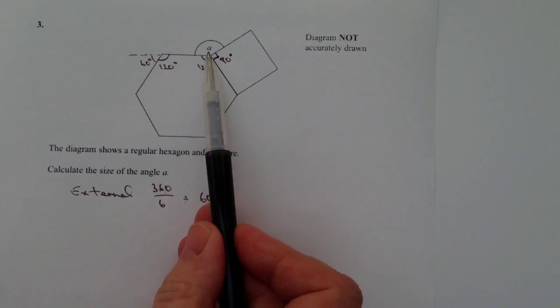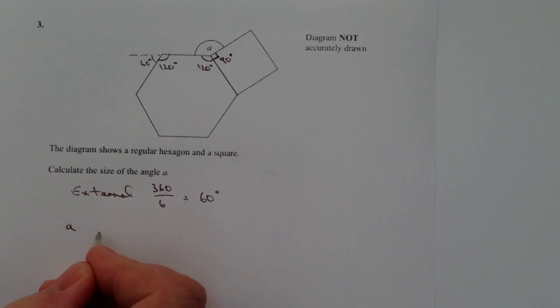So what it means then is that if we add 120 plus 90, we actually get 210 degrees. So to find out this value of a, it's going to be equal to 360 minus 210 degrees.